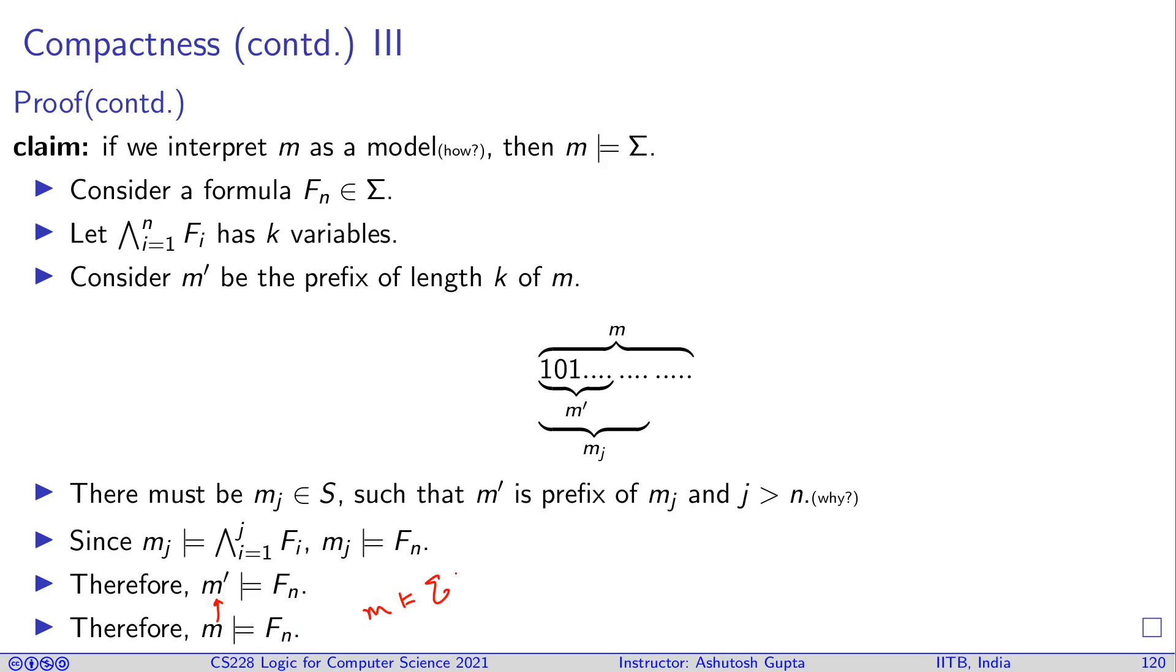Now this theorem can be used to really prove our completeness theorem. How do we do that? We wanted to say that Σ implies F. What we do is that you say Σ union not of F is unsat. We want to show that. But since it is unsat, there must be a subset of Σ, let me call it Σ' such that Σ' union not F is unsat. If that is the case, then you can basically say that Σ' proves F. And therefore, I can say that Σ proves F. That gives you completeness.